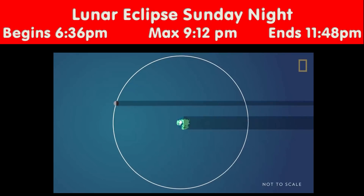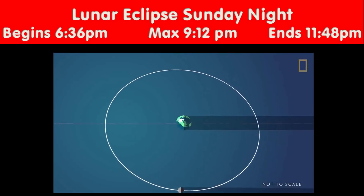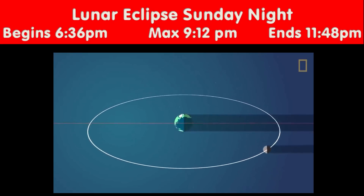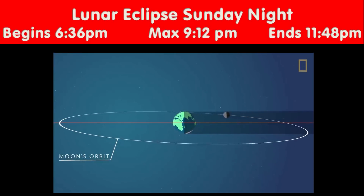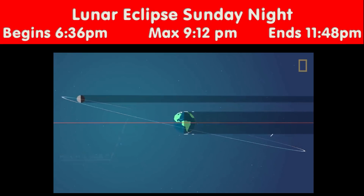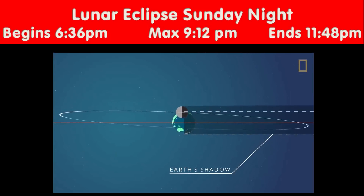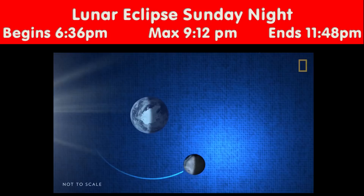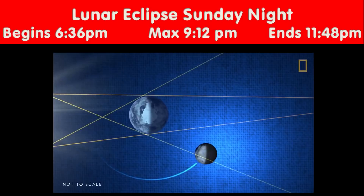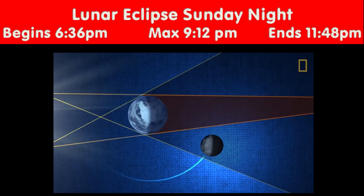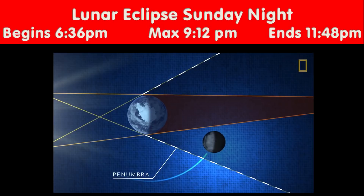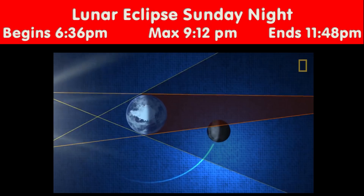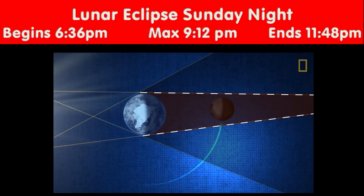So why don't we have an eclipse every month? The Moon's orbit is tilted a few degrees in relation to the Earth, so the Earth, Moon, and Sun don't always align. When the Earth does eclipse the Sun, it casts two types of shadows on the Moon: a larger shadow known as the penumbra, and a smaller, darker shadow known as the umbra.